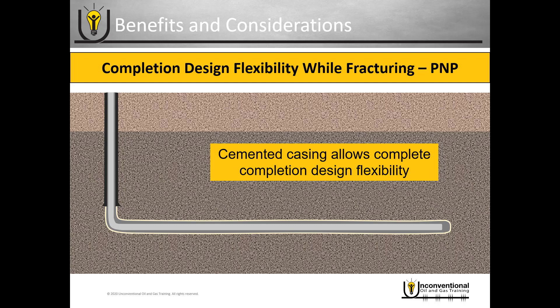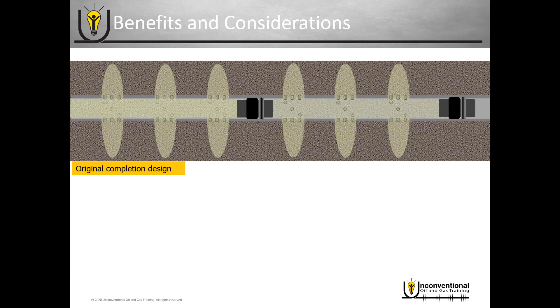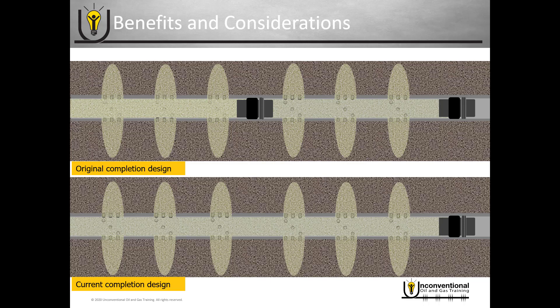A situation that comes up somewhat frequently today is with drilled but uncompleted wells — they come back a year or two later and their completion design looks very different than it did originally. If the original design was maybe three clusters per stage but now their modern completion design is six clusters per stage, it's very easy to adjust by just firing the perforations how you want to.